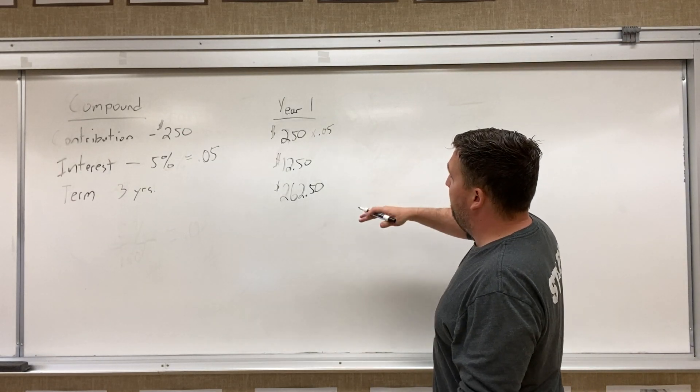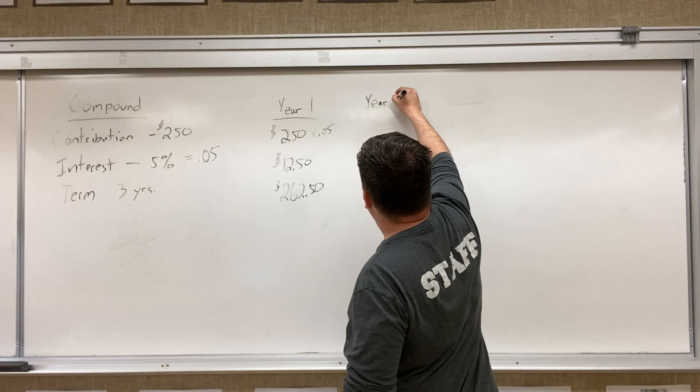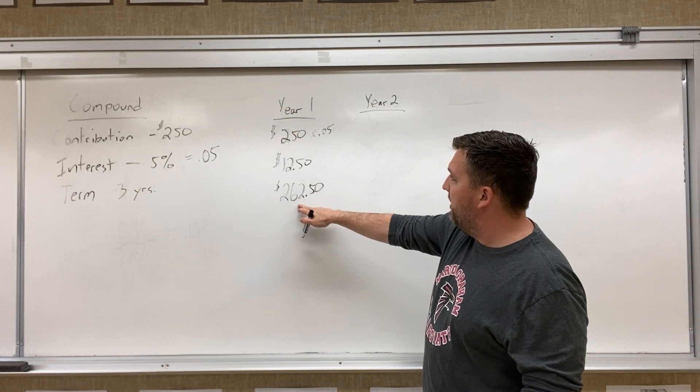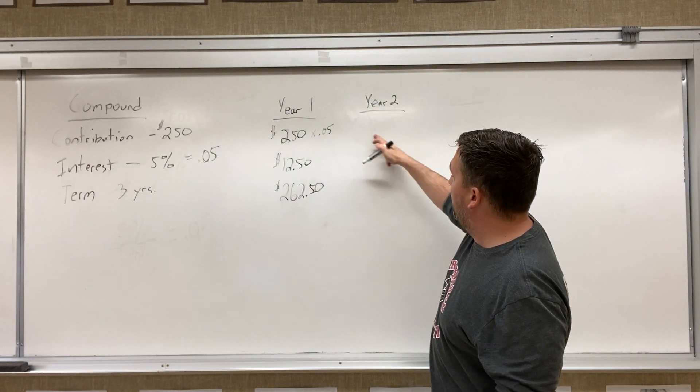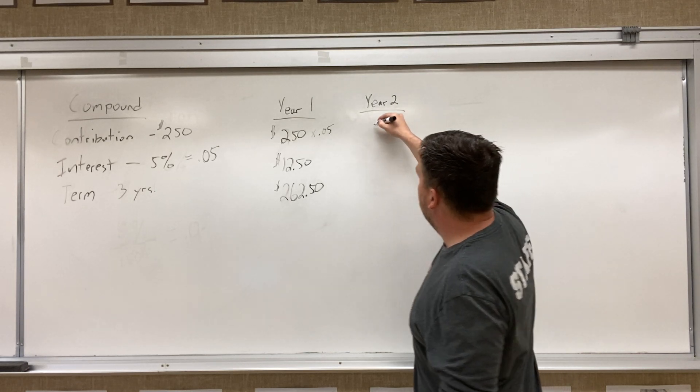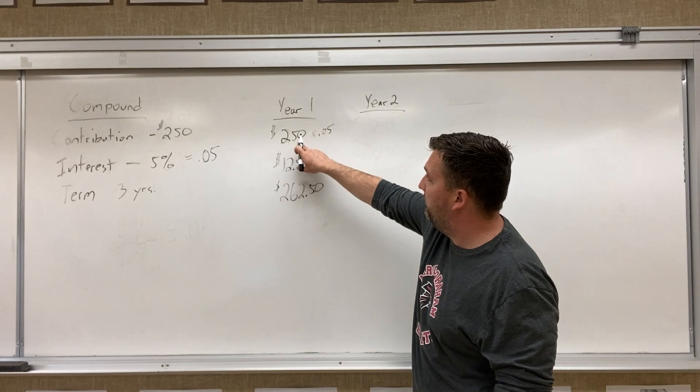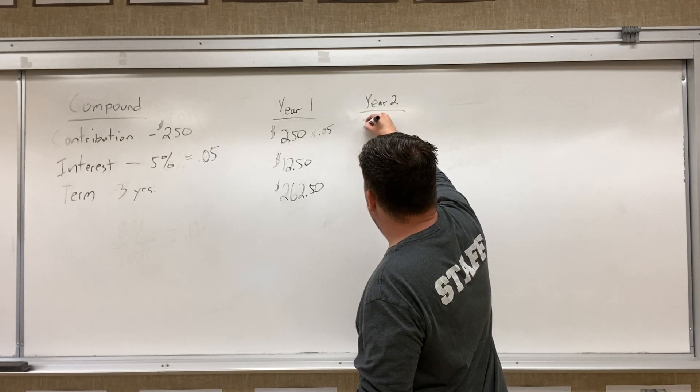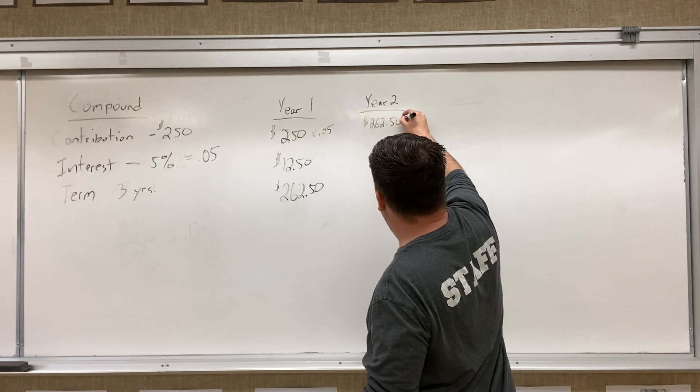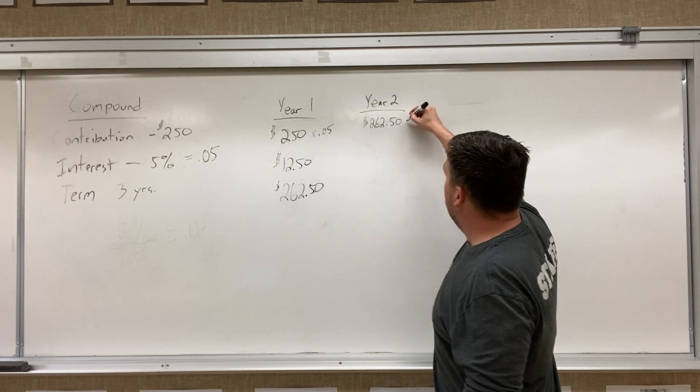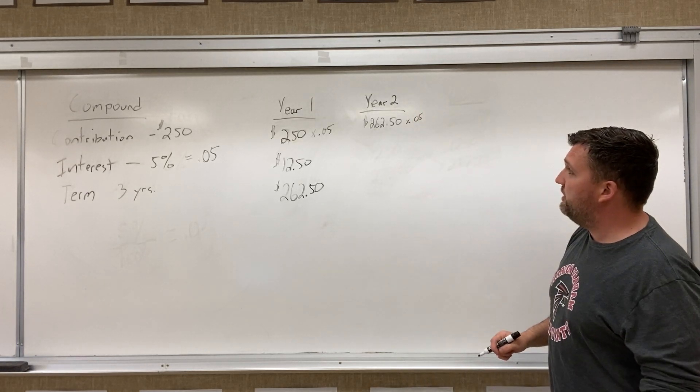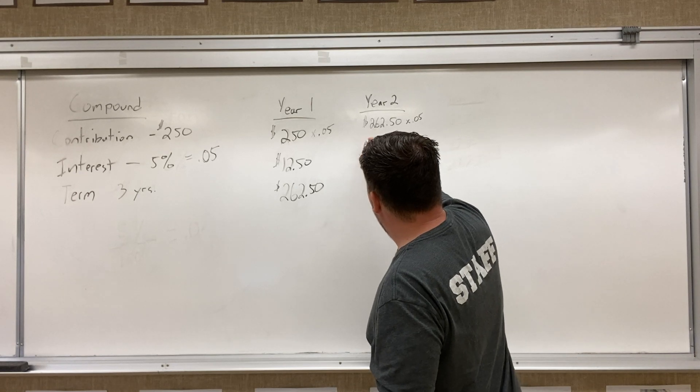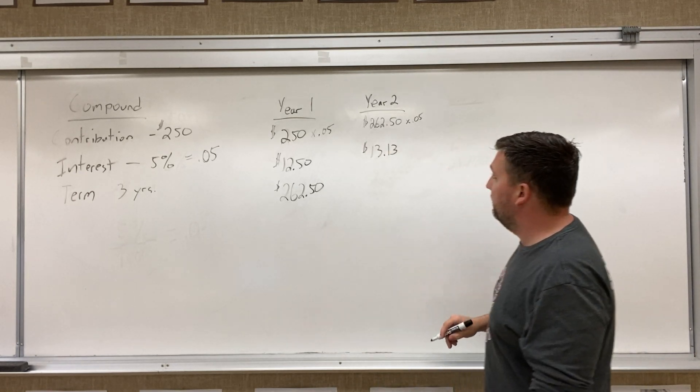So, where it starts to compound is in year two. So, in year two, now we get to take the interest we made off of our first year, and we're going to start, and that's going to be our starting investment amount for the year now. Because we get to make interest off of this instead of off of just that. That's the difference between simple and compound. So we're going to take our investment of $262.52, and we're going to figure out that again times the 5% interest. And when we calculate it out this time, we're going to get $13.13 when we round up, when we round to the correct numbers.